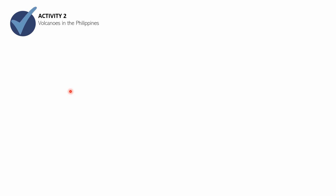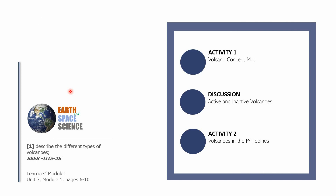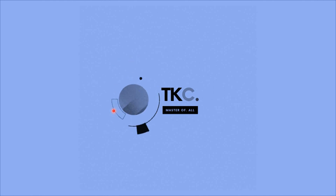That ends Activity Number Two — Volcanoes in the Philippines — and it also ends this session. You're through with Activity One: Volcano Concept Map; the discussion on active and inactive volcanoes; and Activity Number Two: Volcanoes in the Philippines. The learning competency you are supposed to master is differentiating volcanoes into active and inactive. This is the Knowledge Catalog of Earth and Space Science for Grade Nine. This is Sir CJ. I hope you learned something in this video, and I'll see you in the next video in this series. Have a good day.